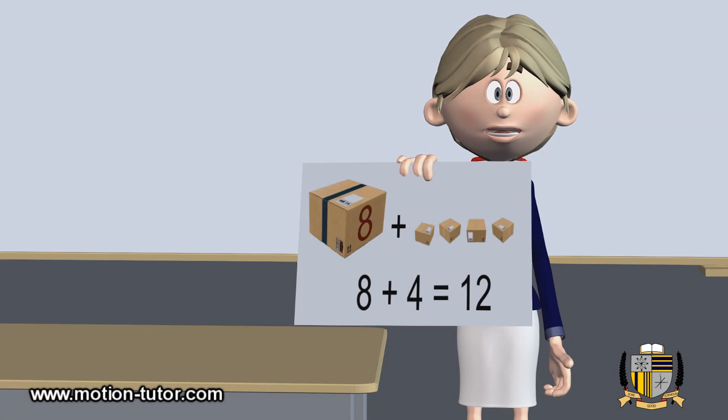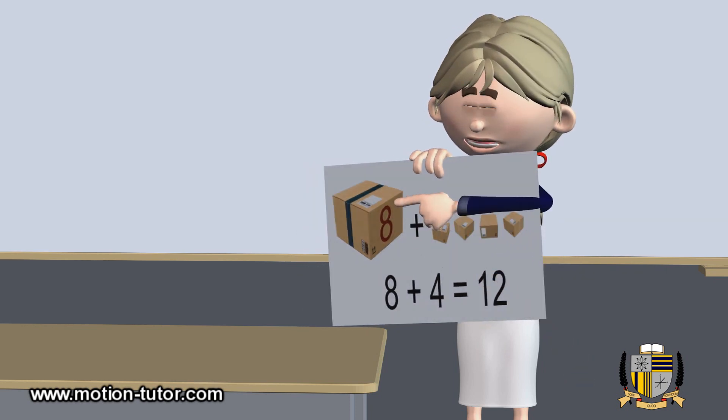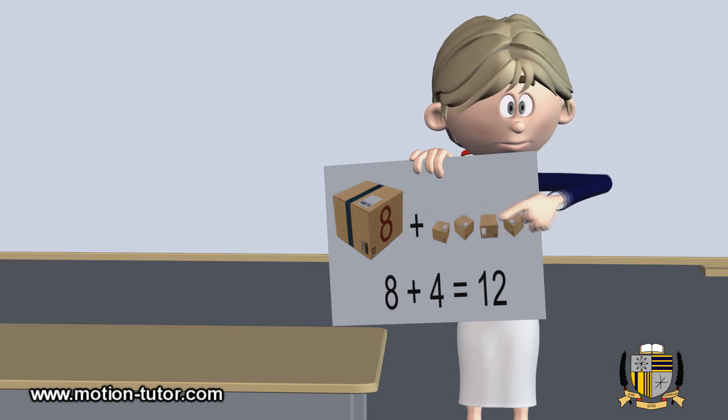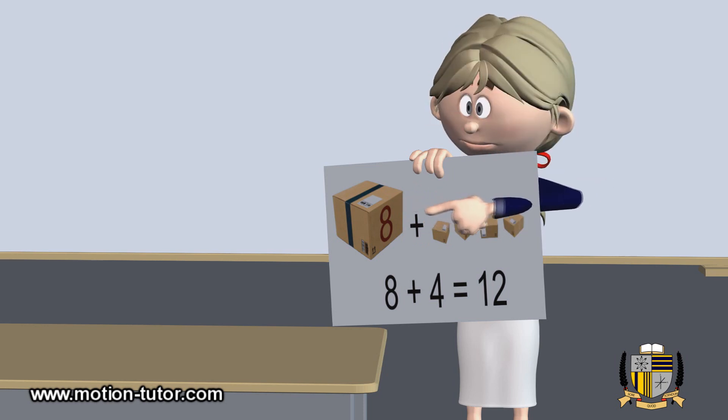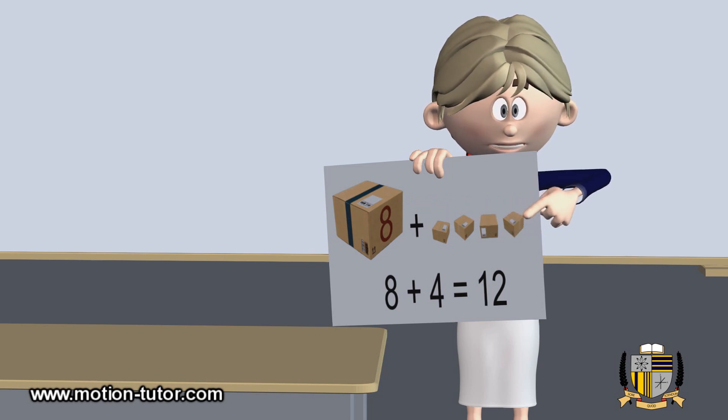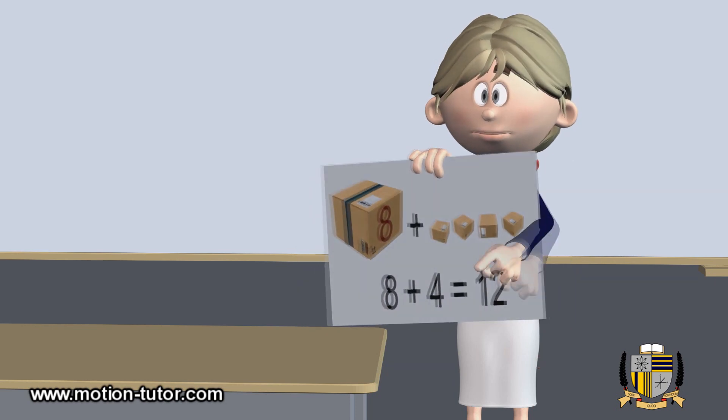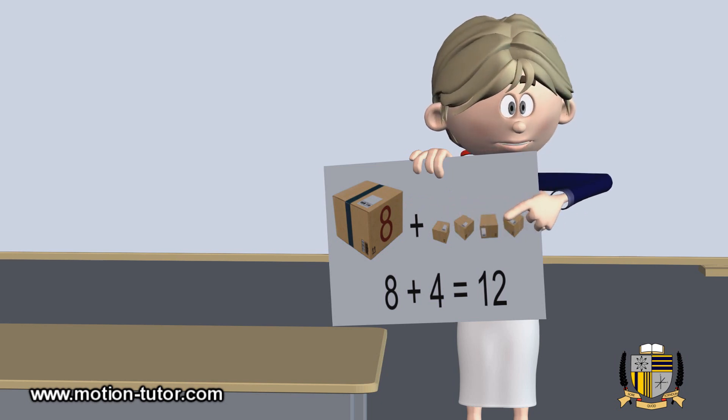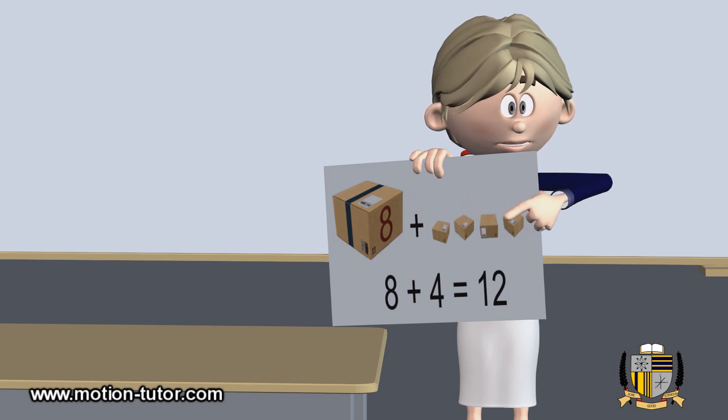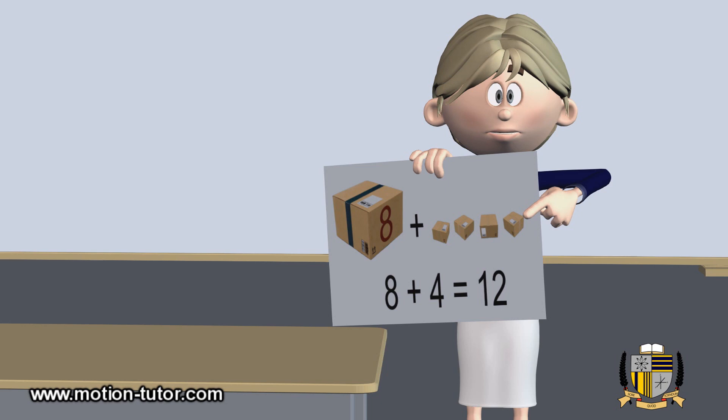So what about eight plus four? Well, we're going to count on from eight. So we're going to say eight, and there's a four right here, so it's going to be eight, nine, ten, eleven, twelve. Okay, eight plus four is twelve. So that is counting on. We just start from the first number and we count as many as the next number on, and then we find the final answer.